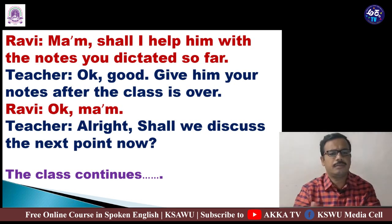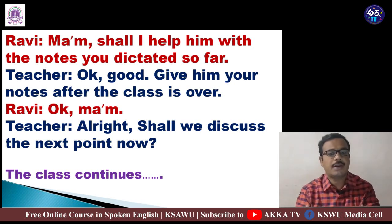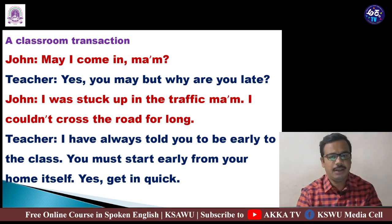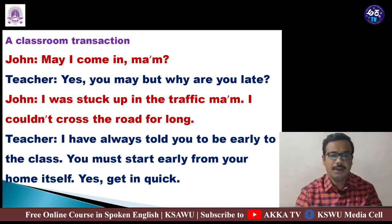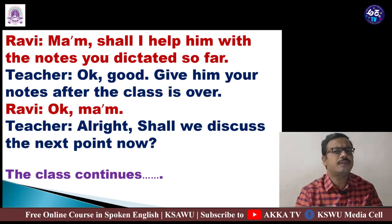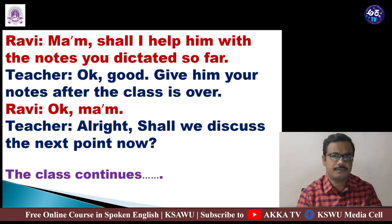Now I would like to make a few points. Observe the words highlighted in each dialogue. In John's first dialogue, 'may' is highlighted. In the teacher's response, 'may' is again highlighted. When John speaks next, 'couldn't' is highlighted. In the teacher's next statement, 'must' is highlighted. In Ravi's dialogue, 'shall' is highlighted, and in the teacher's last exchange, 'shall' is also highlighted. So may, couldn't, must, shall — these are all called modal auxiliaries.